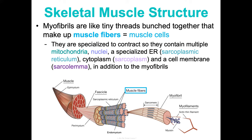Muscle cells can be upwards of 30 centimeters long. They also have glycosomes — granules of stored glycogen that help produce glucose when we need ATP — and myoglobin, which is a red pigment for storing oxygen.